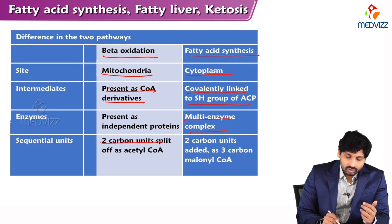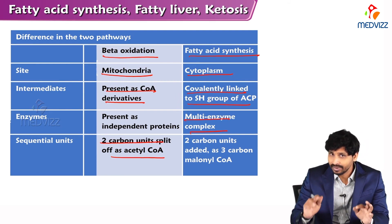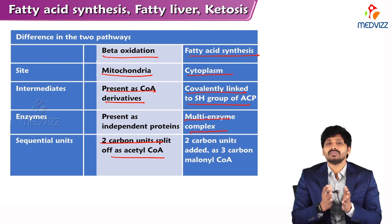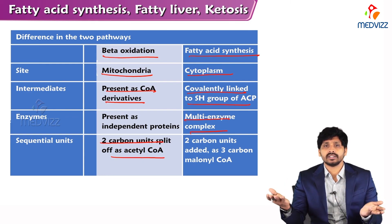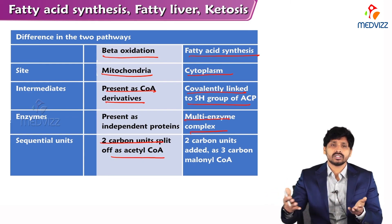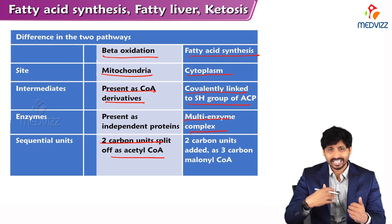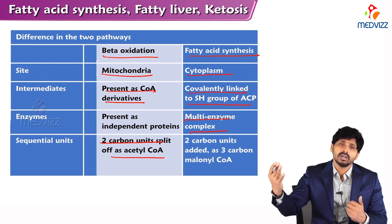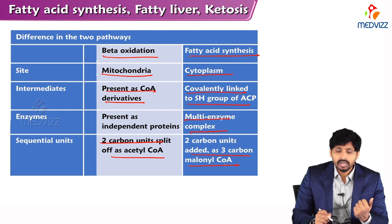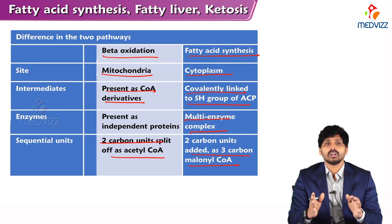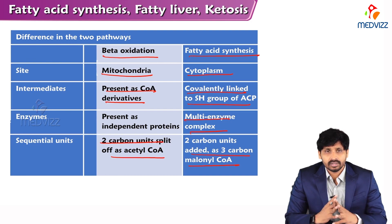In beta-oxidation, two-carbon units are sequentially removed as acetyl-CoA. In fatty acid synthesis, two-carbon units are sequentially added — as three-carbon malonyl-CoA — to build fatty acids. Short-chain, medium-chain (up to 16 carbons), and long-chain fatty acids (above 18 carbons) are formed by this sequential addition. That covers the key differences between beta-oxidation and fatty acid synthesis. Thanks for listening.